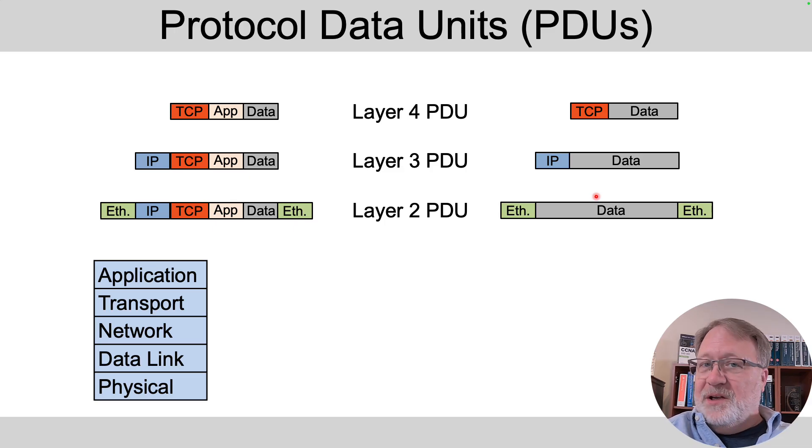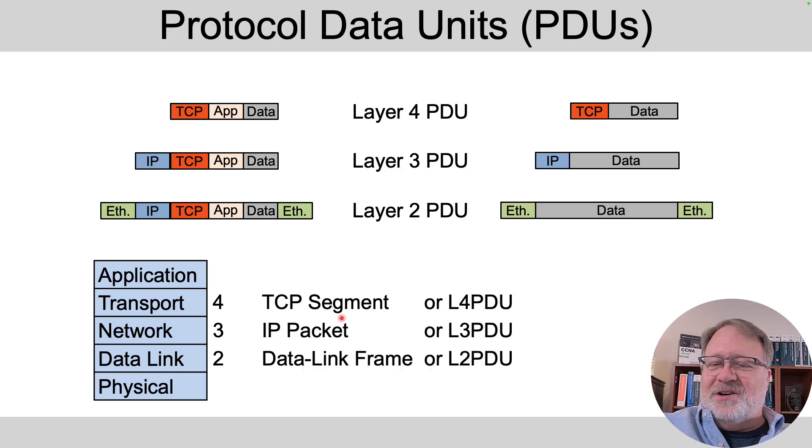There are three alternate terms you can be aware of. Less important to memorize, but there's a generic term called protocol data unit instead of segment, packet, and frame. Because the layers in the TCP/IP model, you can think of them as number one, two, three, and four. Here's the data link layer entity. It's a layer two PDU. The layer three entity, it's a layer three PDU and layer four PDU. So just to sum up the terms, we could say these messages are TCP segment, IP packet, or data link frame, or just call them for shorthand, L4 PDU, L3 PDU, and L2 PDU.